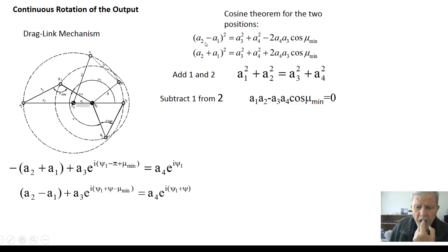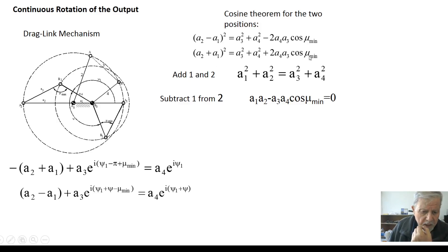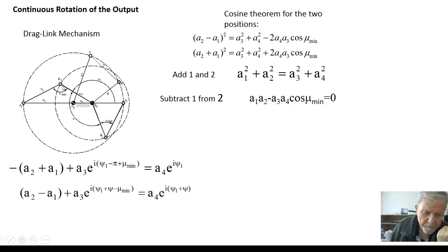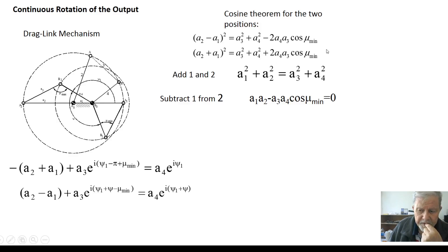Using the cosine theorem for these two positions: (a2 minus a1) squared equals a3 squared plus a4 squared minus 2·a4·a3·cosine(mu_min). For the extended position: (a1 plus a2) squared equals a3 squared plus a4 squared plus 2·a4·a3·cosine(mu_min), where the external angle pi minus mu_max gives mu_min. To achieve the best transmission angle, we want both minimum transmission angle values to be equal at the two extreme cases.